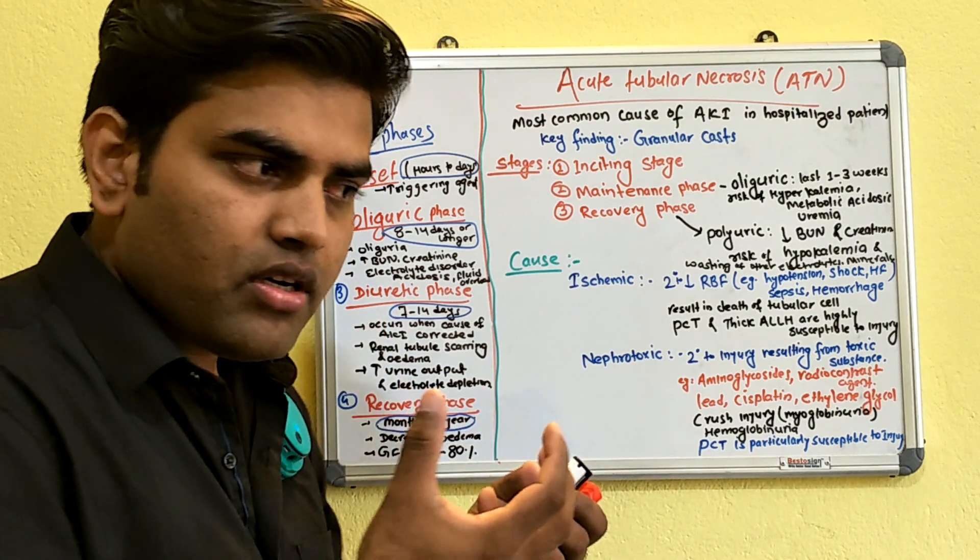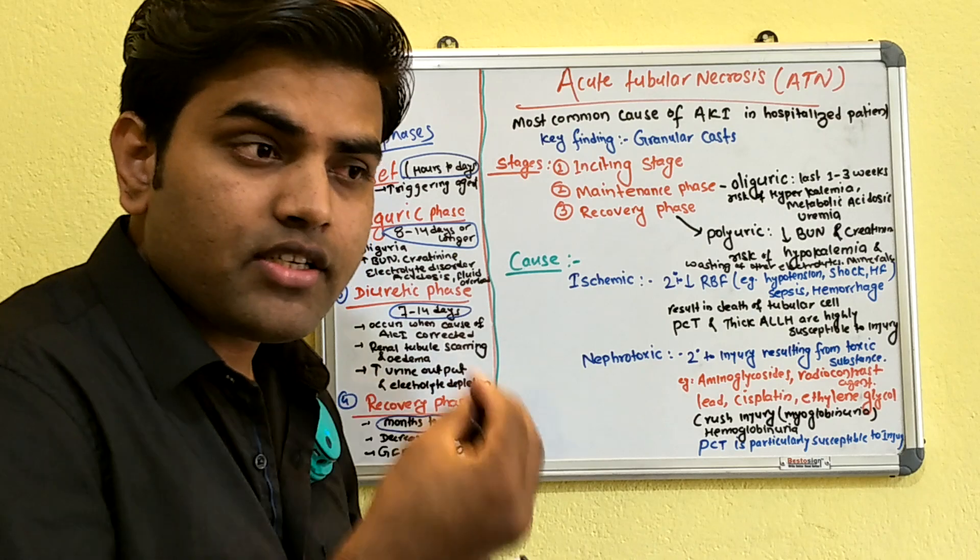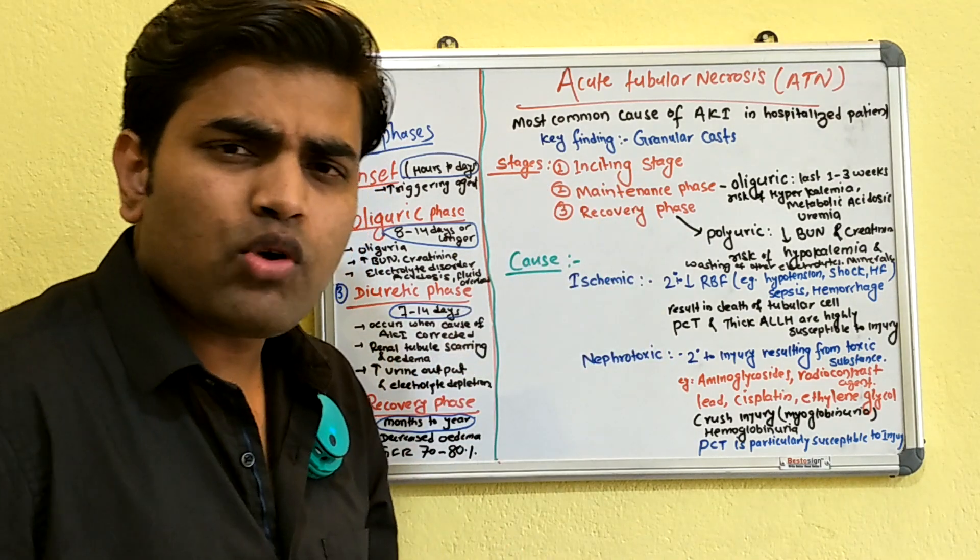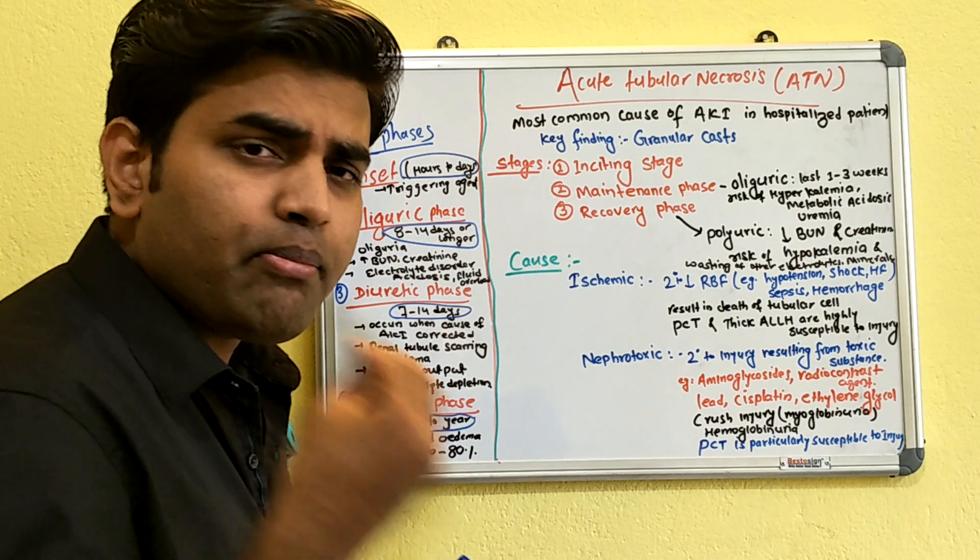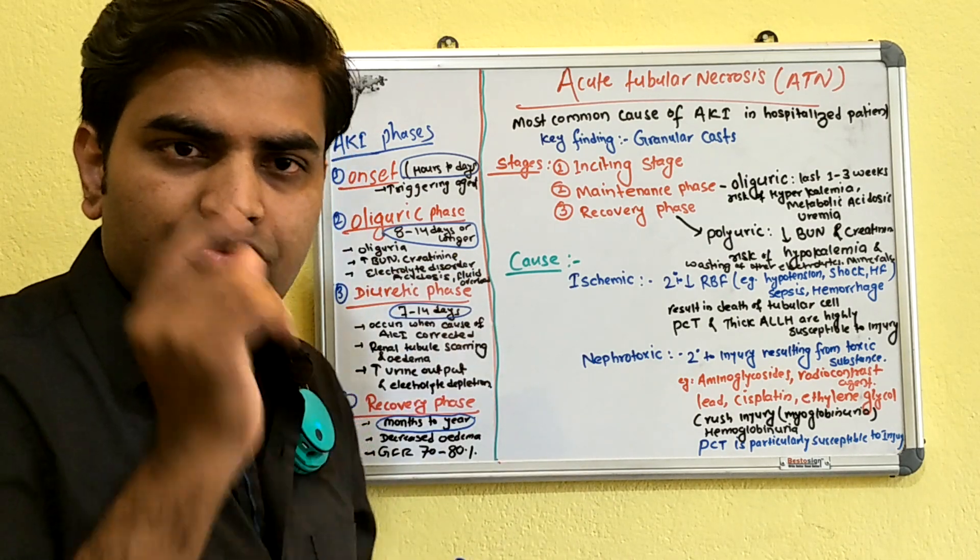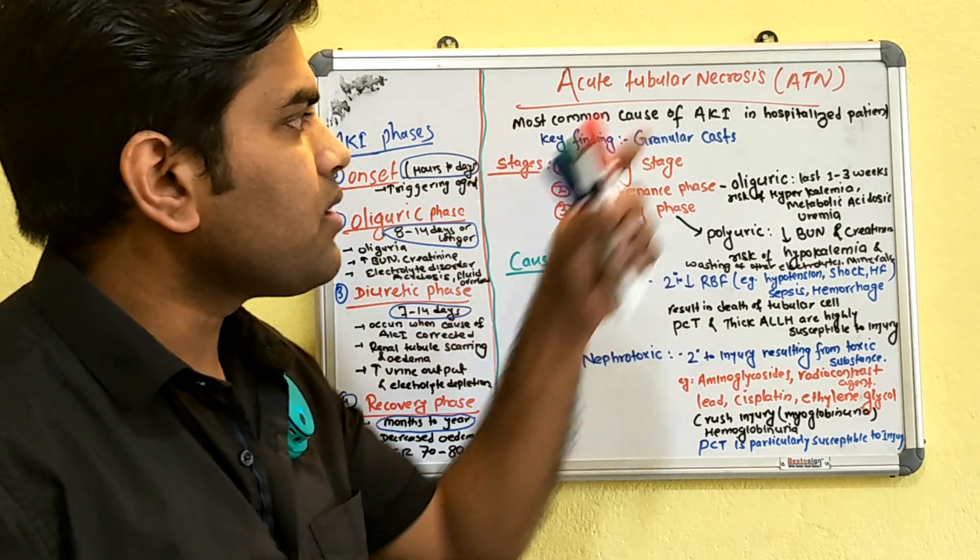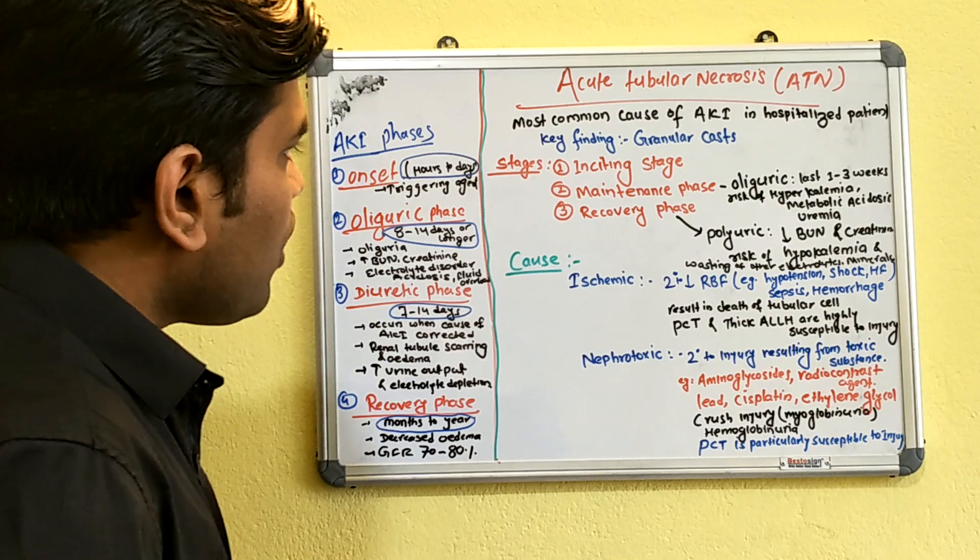Another point: since there is necrosis, the function of the kidney to reabsorb is not present. This leads to increased sodium excretion into the urine, so FENa (fractional excretion of sodium) will be increased in acute tubular necrosis.